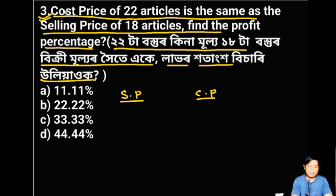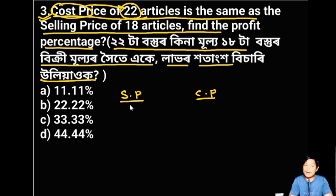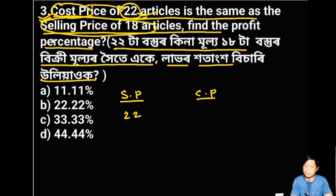Cost price — how much price is the name of the article? How much price is the price of 18 articles? This is the price of 20 articles, this is the price of 18 articles.